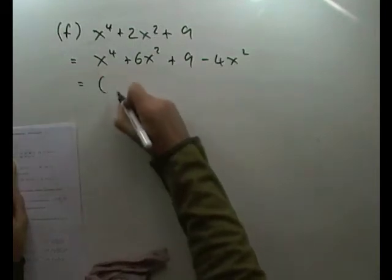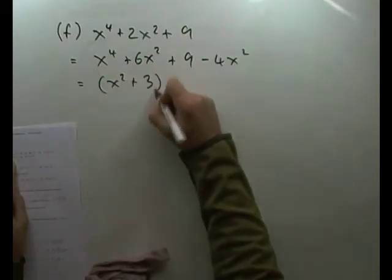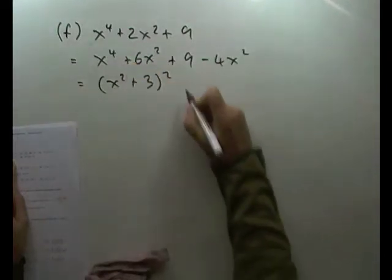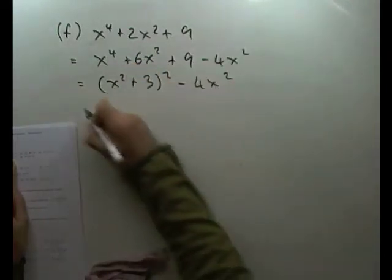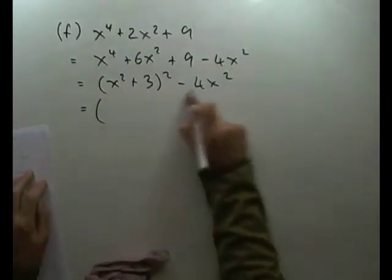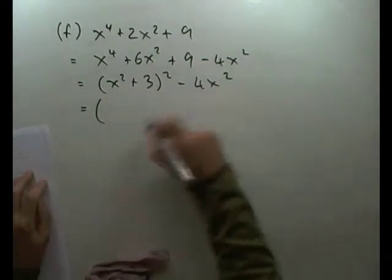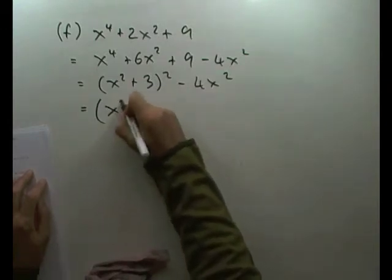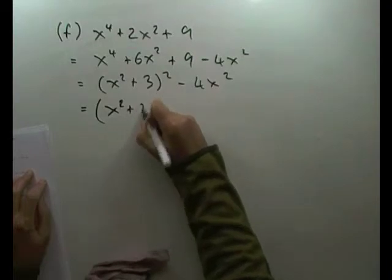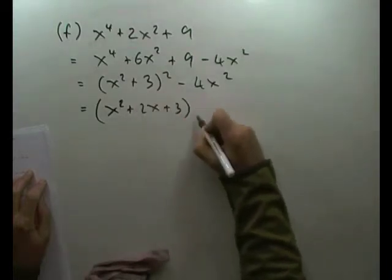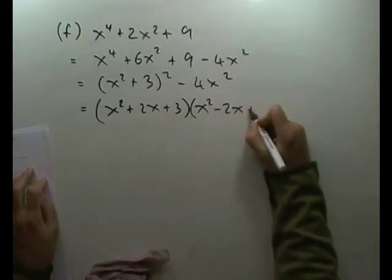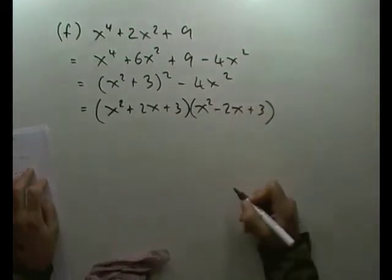Now I've got x squared plus 3 all squared. 9 and then twice the product of 6 minus 4x squared, which is again the difference of two squares. So I'm going to have that take away that and that plus that or the other way around. So I've got x squared, that being the square of 2x. So I've got x squared plus 2x plus 3 times x squared minus 2x plus 3.